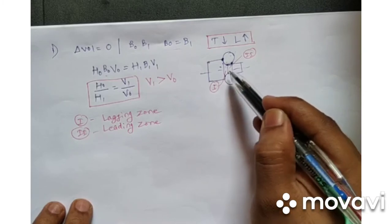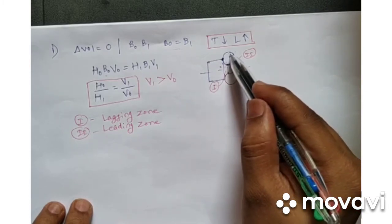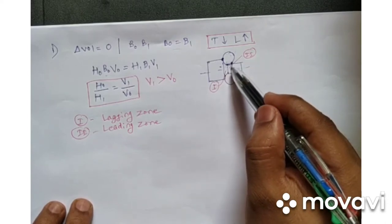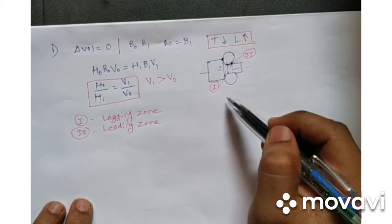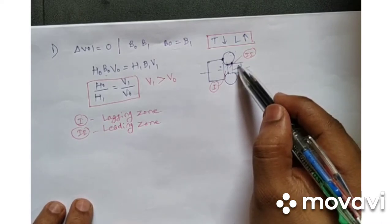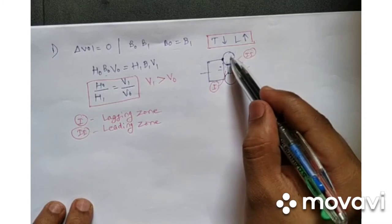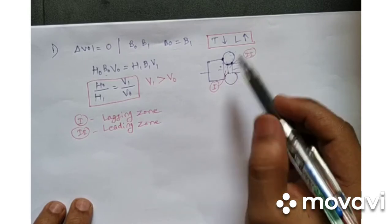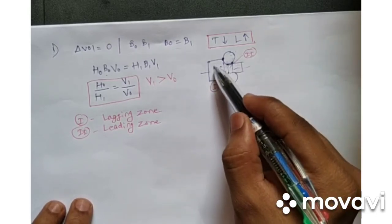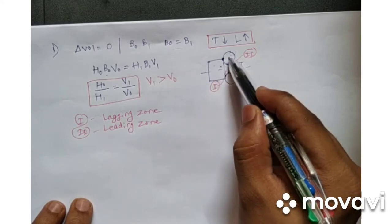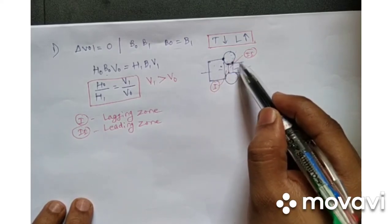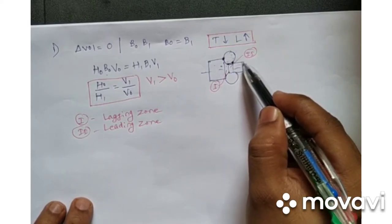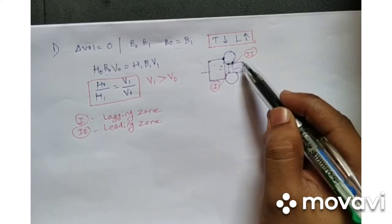At the neutral point, the velocity of the strip becomes equal to the velocity of the roller, so the relative velocity is zero. After the neutral point, in the leading zone, the velocity of the strip continues increasing and becomes greater than the roller velocity. The relative velocity increases again, but in the opposite direction — in the lagging zone the strip was slower than the roller, but in the leading zone the strip is faster.